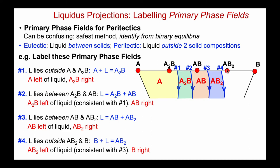Finally, the liquidus reaction labeled number four lies outside AB₂ and B — it's a peritectic. The equilibrium is B plus liquid in equilibrium with AB₂. The primary phase field to the left is AB₂ and the primary phase field to the right is B. As long as we're careful and systematic — working from left to right and identifying the binary equilibria for the liquidus valleys — we can correctly identify the associated primary phase fields and make sure they're consistent with each other. This approach works for more complicated ternary phase diagrams.